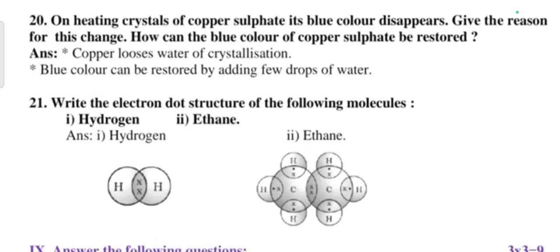Question twenty-one: write the electron dot structure for the following molecules: hydrogen and ethane. This is the answer.